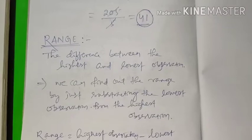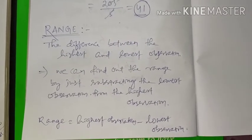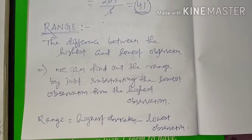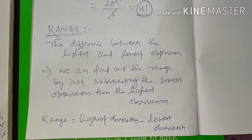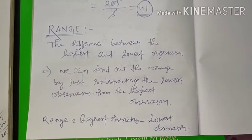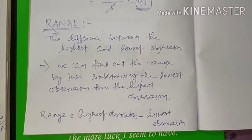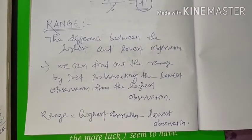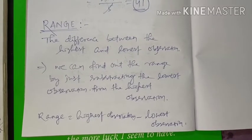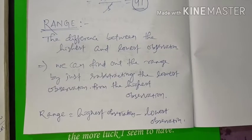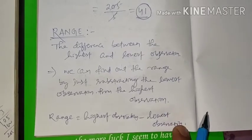Now let us discuss another term: range. Range is the difference between the highest and lowest observation. We can find the range by subtracting the lowest observation from the highest observation. Range = highest observation − lowest observation.